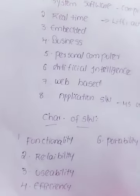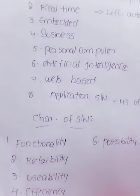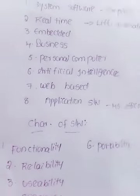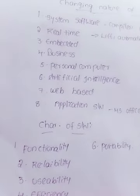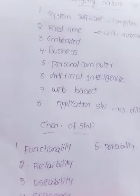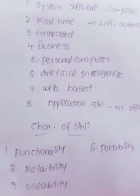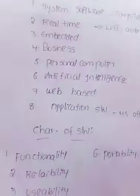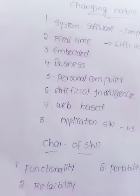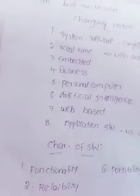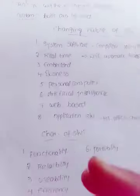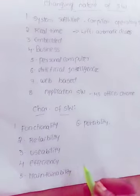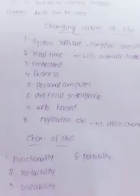Functionality means it is working nature, whatever operations run on the performing machine. Reliability is the capability of software - how long it can work in good condition, consistently working. Usability is the entire process. Fourth, the ratio of work performed by the machine. Fifth, performing a successful action in given time.